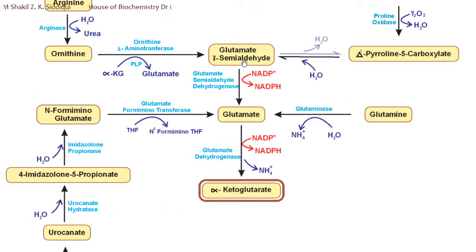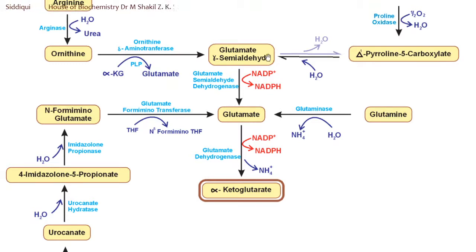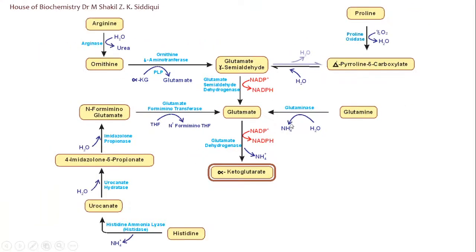Glutamate gamma semi-aldehyde can be converted into glutamate by the enzyme glutamate semi-aldehyde dehydrogenase. This enzyme oxidizes the semi-aldehyde group into the carboxylic group of glutamate, so NADP+ is used and converted into NADPH. This is an oxidation reaction.